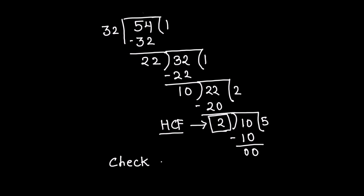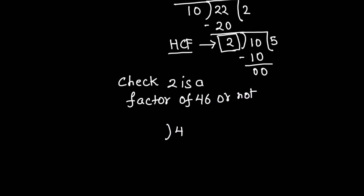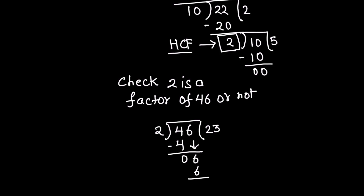Now we check whether 2 is a factor of 46 or not by dividing 46 by 2. 2 times 2 is 4, we drop down 6, and 2 times 3 is 6. We get the remainder as 0, which means 2 is a factor of 46.